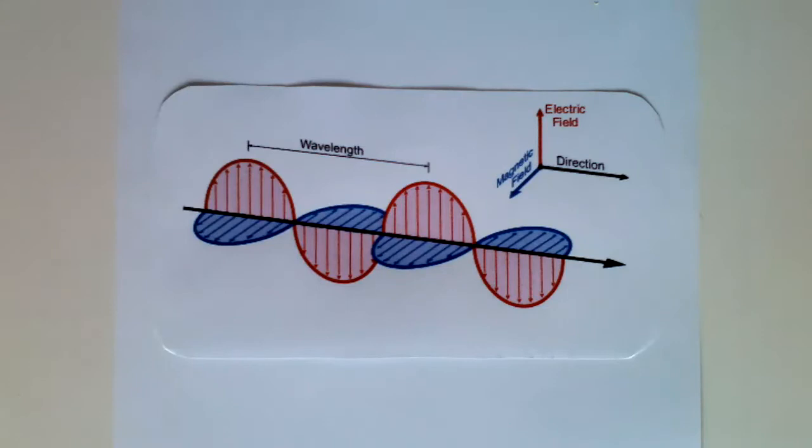Likewise, the waves can be detected as the fields will cause electrons to oscillate in a conductor. This is the basic principle behind the production and transmission of radio waves.